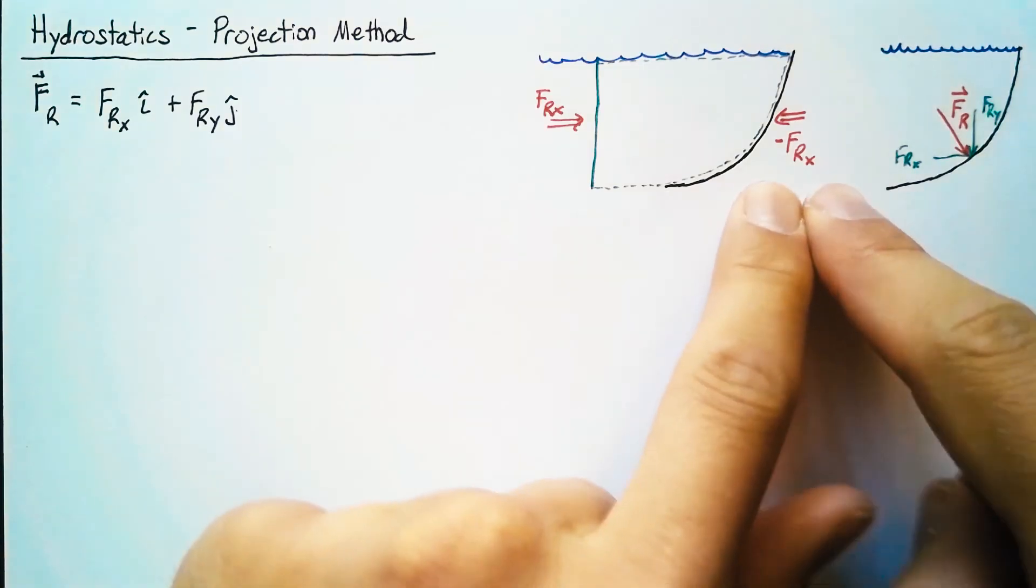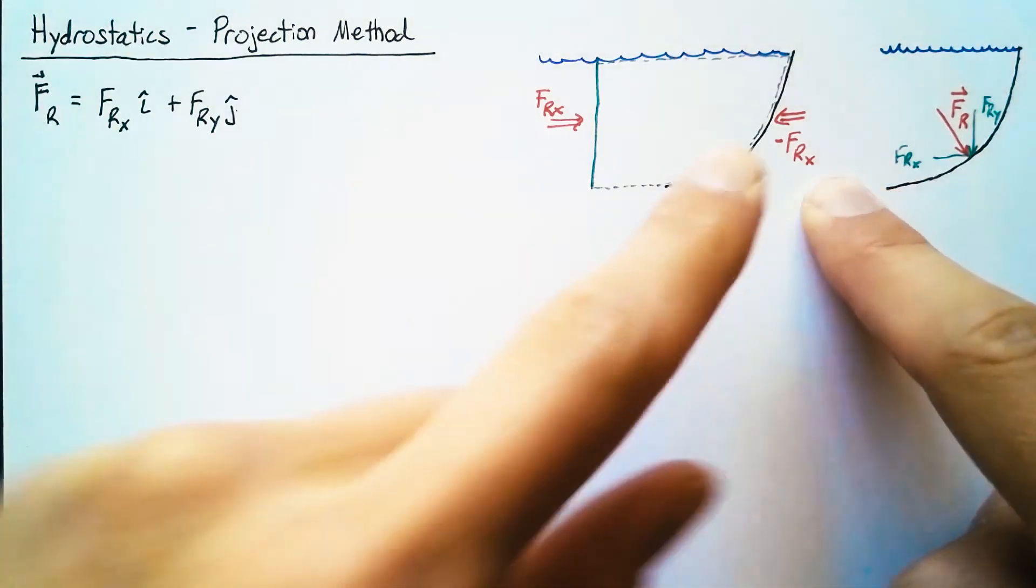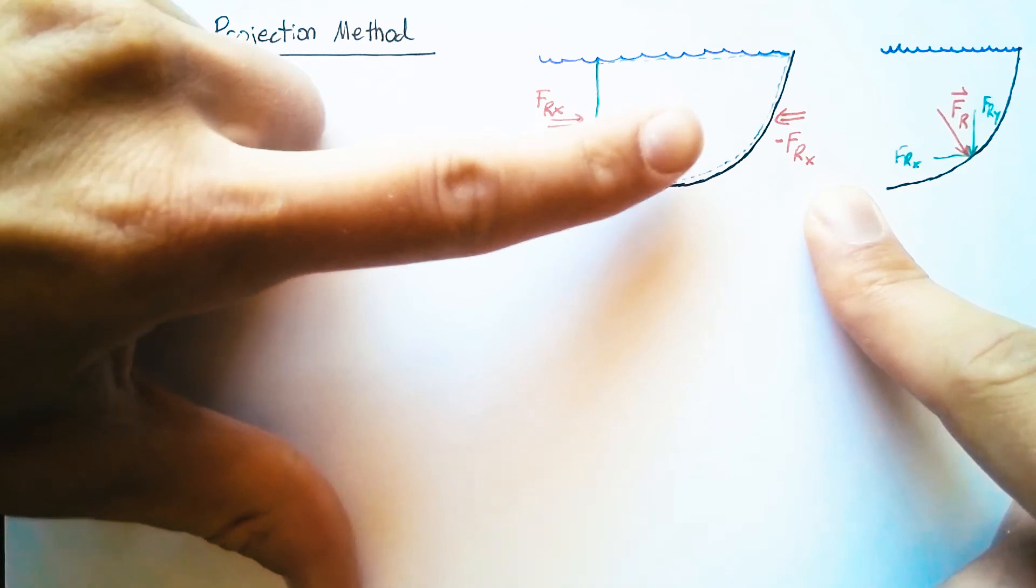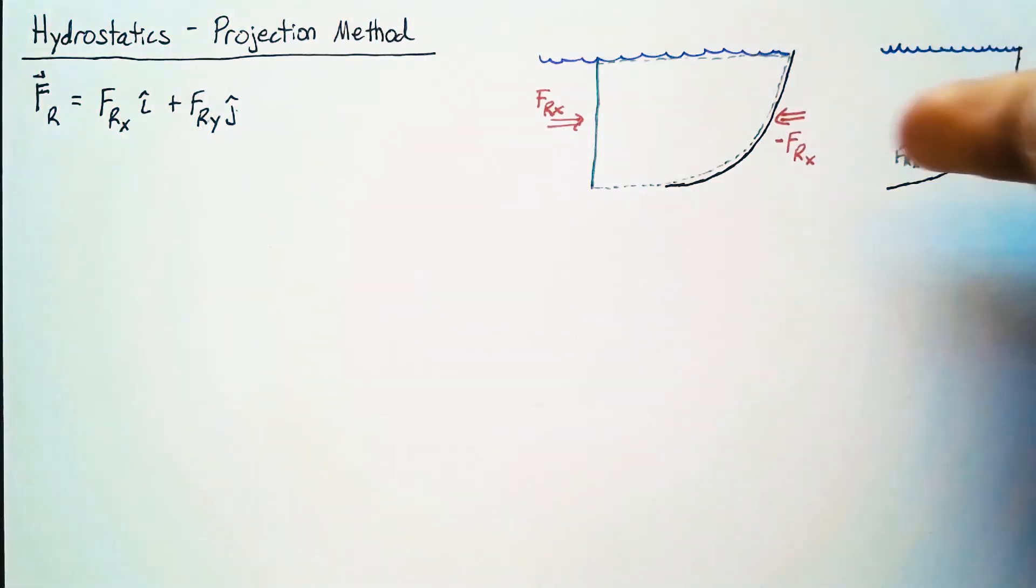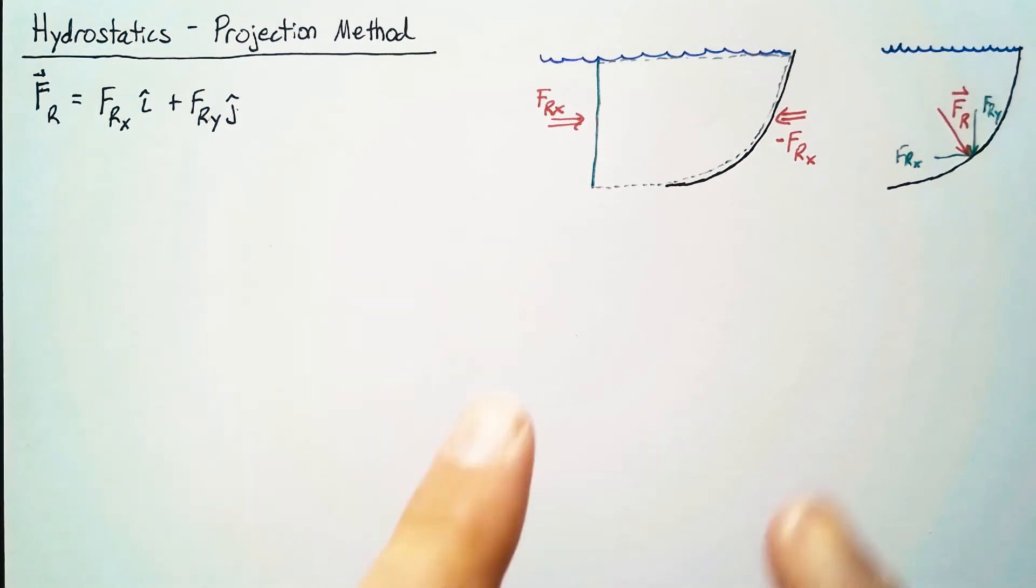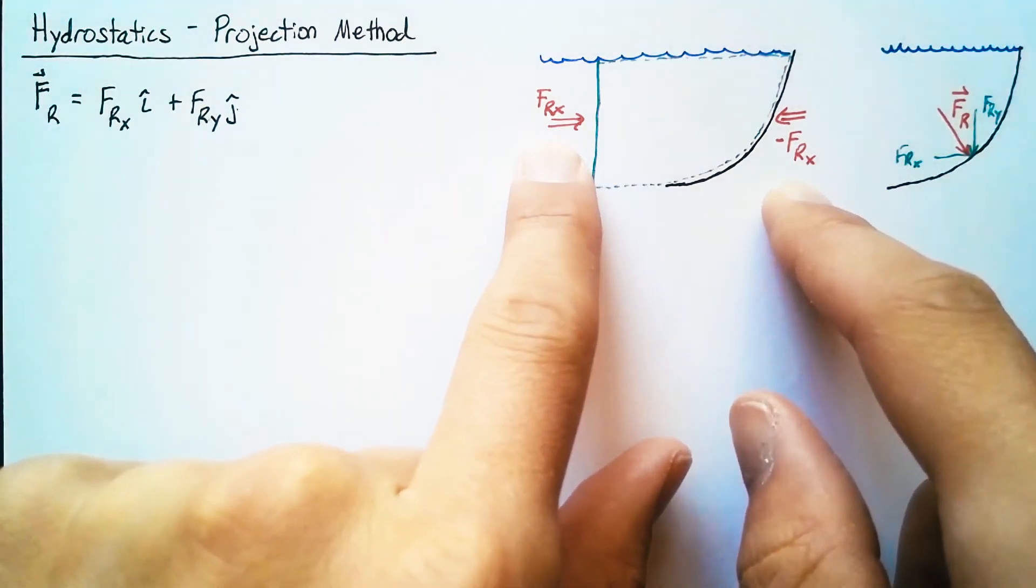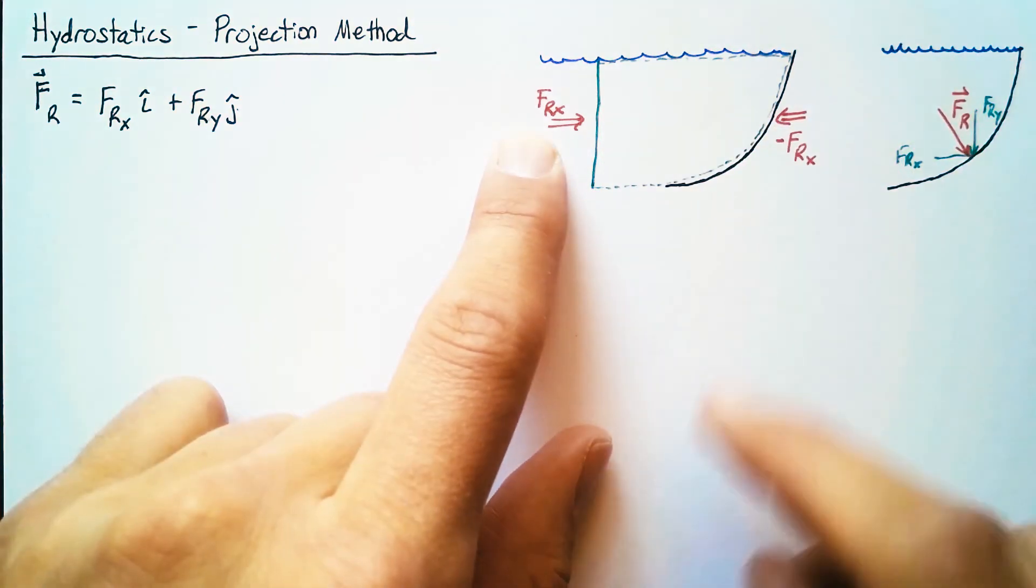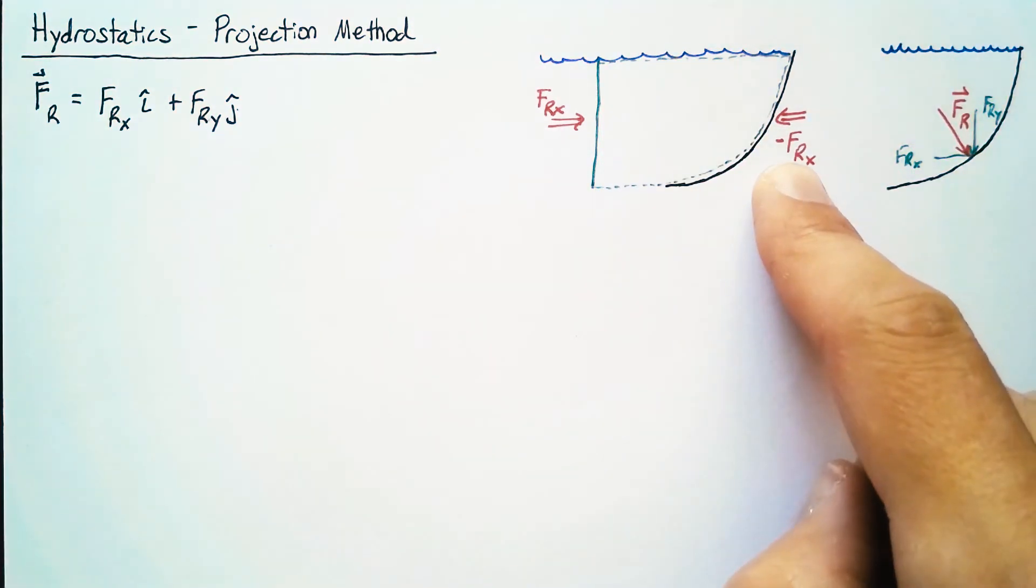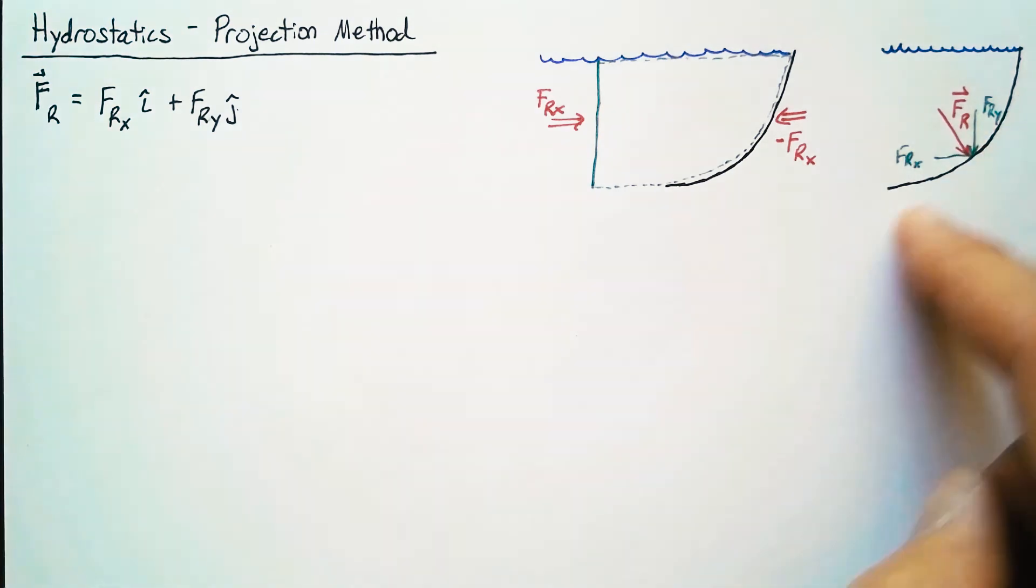Now this force is negative because really what we care about is the reaction force of the water acting on the wall and this would be the wall acting on the water. These forces are equal and opposite. We can take this vertical wall, calculate the force on it, and it will be the same as what we have on our curved wall specifically in the x direction.